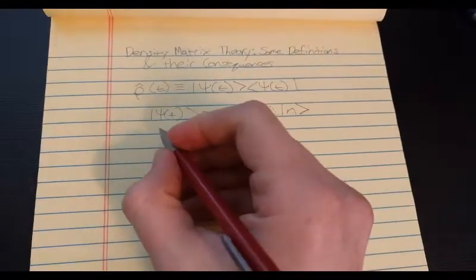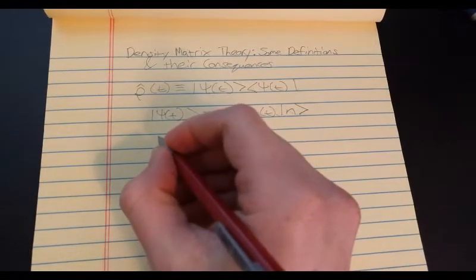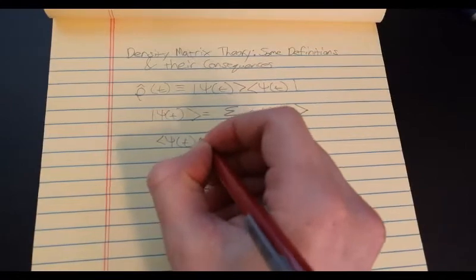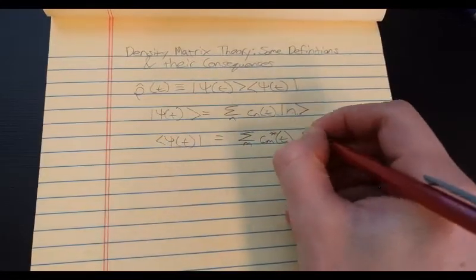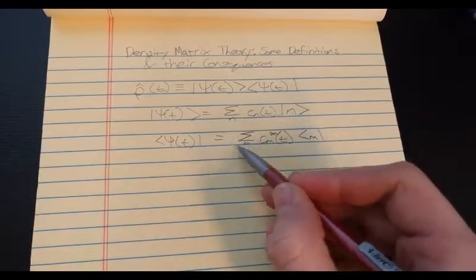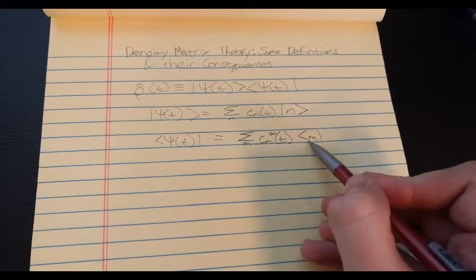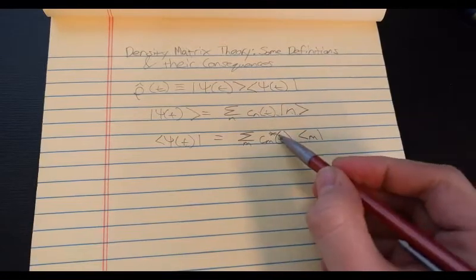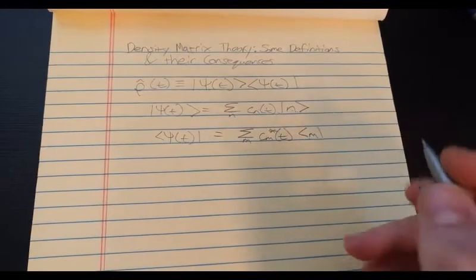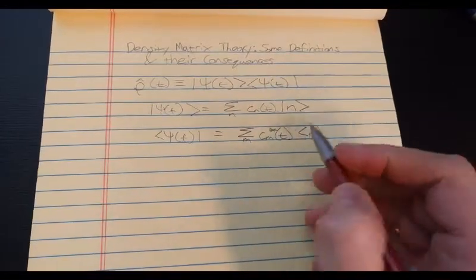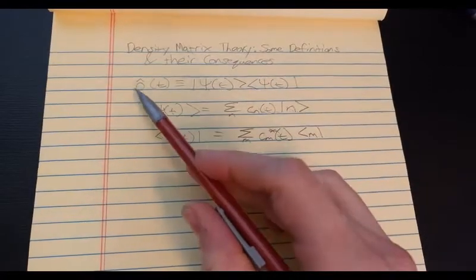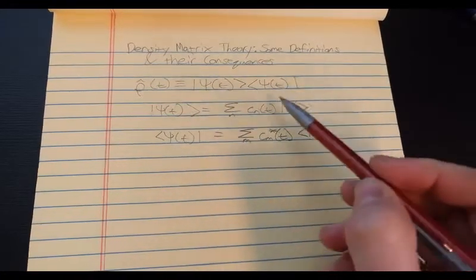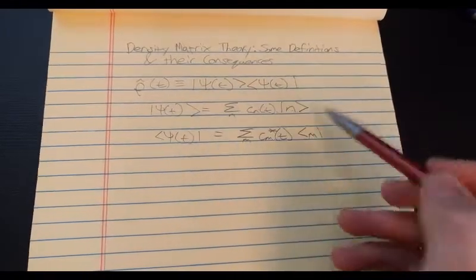And similarly for the bra we have. That would be the basis expansion for the bra of psi of t. Note the complex conjugate on the coefficient there. Now let's expand rho in terms of these basis expansions here.